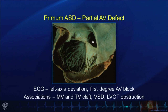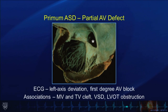Other characteristic features to look for in this type of defect include an abnormality of the tricuspid valve, because this defect is very close to the atrioventricular valves where the AV valves are frequently abnormal. In addition, a ventricular septal defect may be present, in which case we would call this a transitional or partial AV septal defect. Left ventricular outflow tract obstruction may also occur later in life.